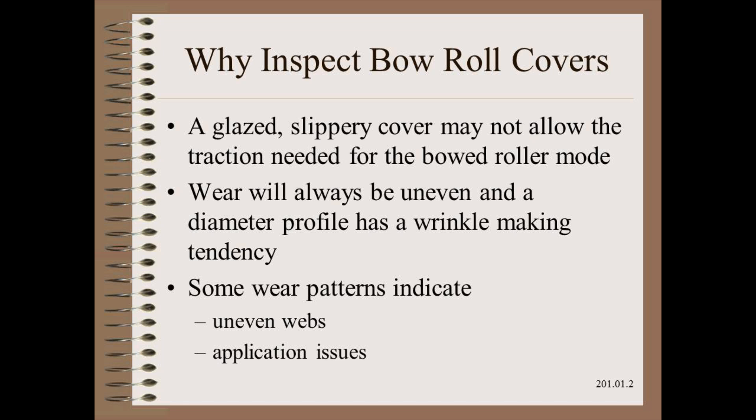Recall from our spreading module that many bowed roller spreaders are intended to operate in the bowed roller mode as opposed to the bent pipe mode. This would require traction to do the spreading work. A glazed or slippery cover might not give you the traction you want, especially at higher speeds when air entrainment becomes a factor on smooth webs. Also recall from the roller spreader and wrinkling modules that a diameter variation represents a wrinkling risk, especially on thin webs. Since wear is always uneven, the resulting variable diameter profile will have the tendency to wrinkle on the very devices that are intended to spread.